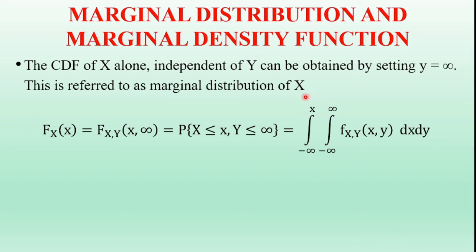Mathematically, it is given as capital F_X of x equals F_XY of (x, infinity), which equals the probability of X less than or equal to x and Y less than or equal to infinity. F_X of x is the marginal distribution function of the random variable X. Here Y equals infinity, so this is the equation of the cumulative distribution function of random variable X alone, independent of random variable Y.